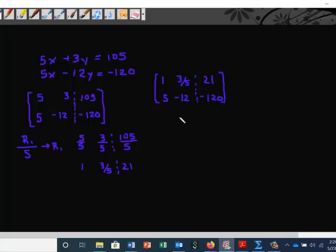Now, we want to get a zero here in this position, right? So I'm going to take negative five times row one, add it to row two to get the new row two. So negative five times 1, 3/5, 21.